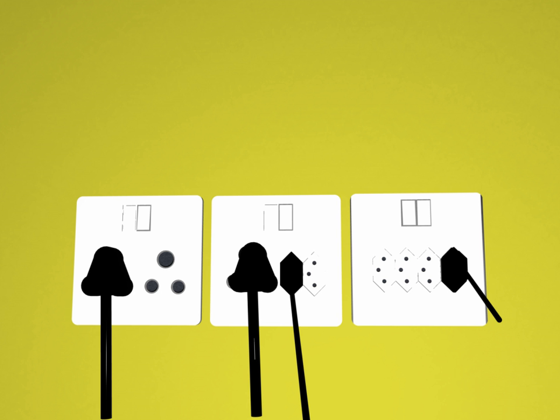However, the IEC 60906-1 standard explicitly discourages the use of multi-standard sockets, claiming that such sockets are likely to create safety problems when used with plugs from other countries.